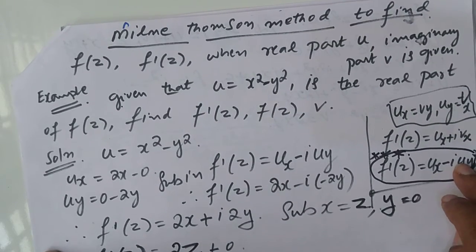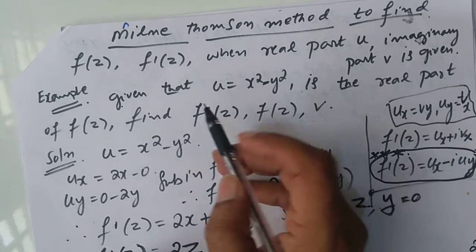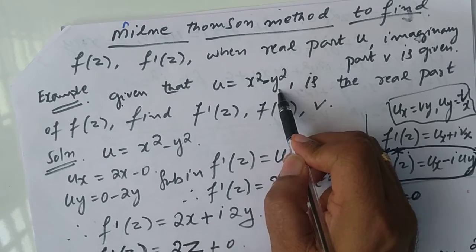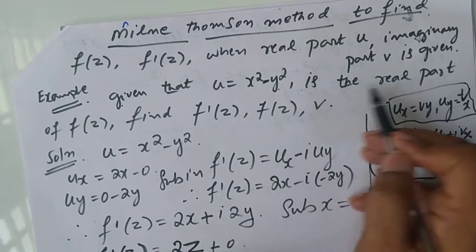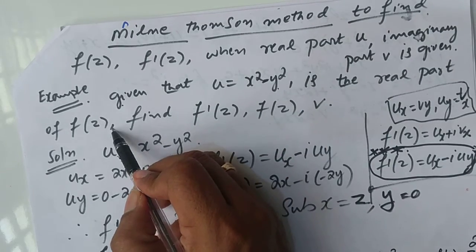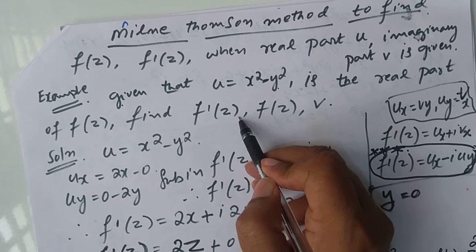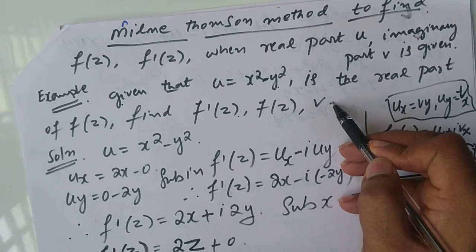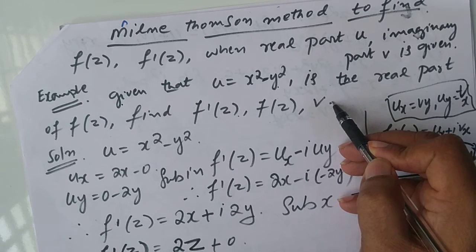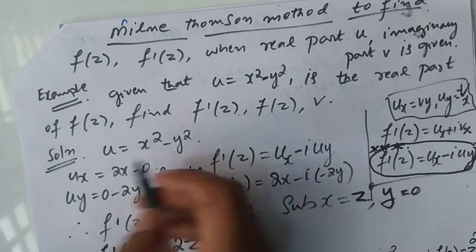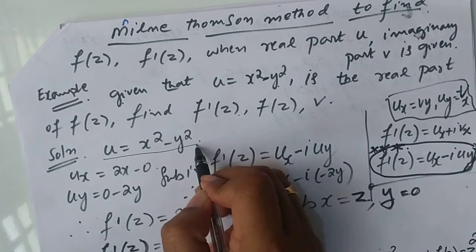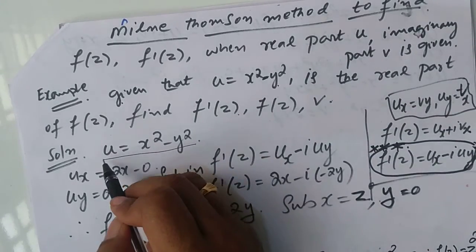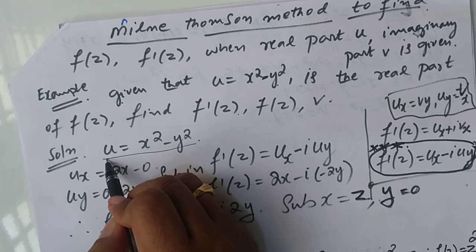Now let us go for Case 2. That is when the real part u of an analytic function f(z) is given. How to find f'(z) and the imaginary part v. When the real part u is given, you have to be very careful.